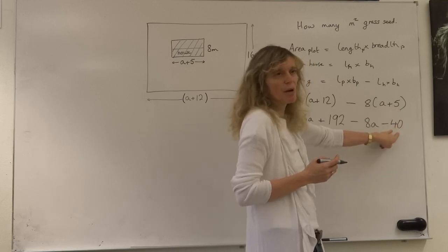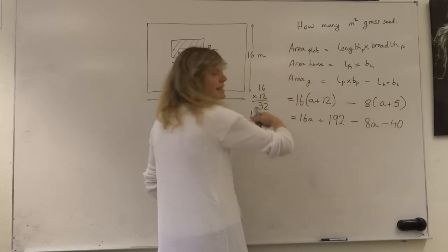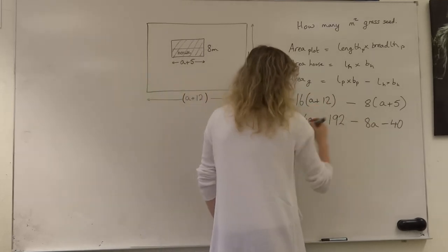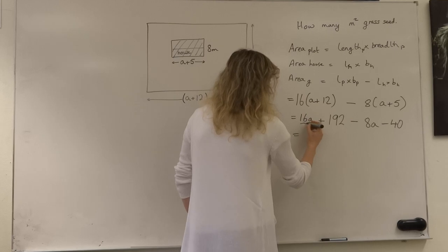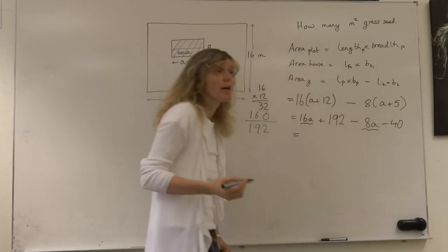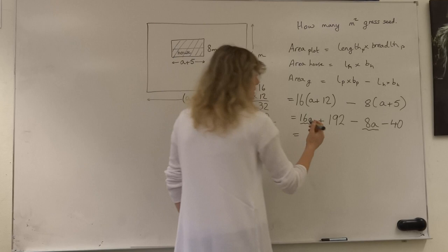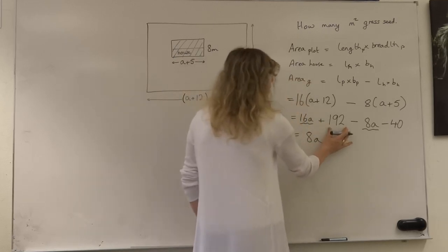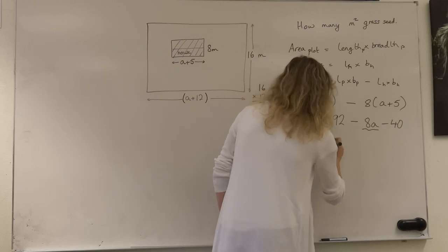Now we can simplify this expression. We only have numbers with a's and numbers by themselves. The first thing we do is take care of the a's by themselves: 16a minus 8a. 16 minus 8 is 8, so we get 8a. And we have 192 minus 40, which would give us 152.